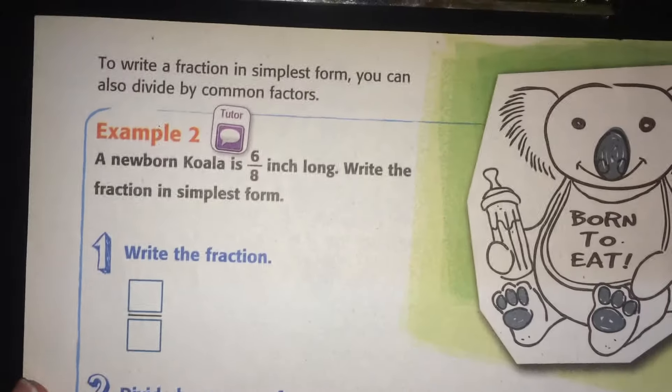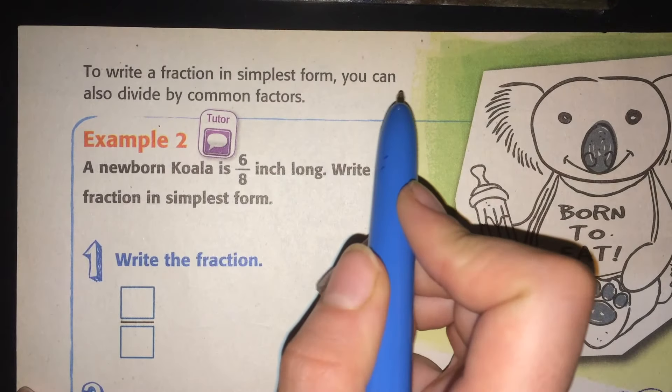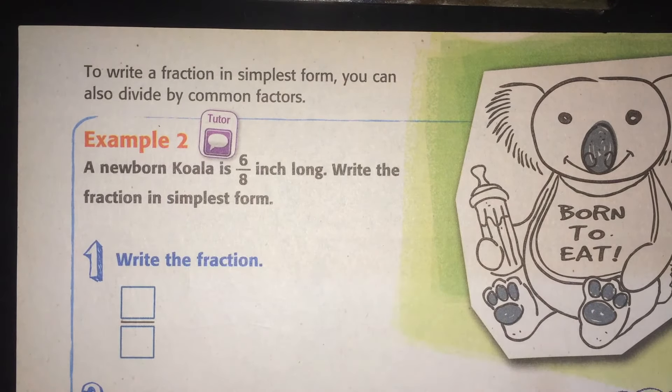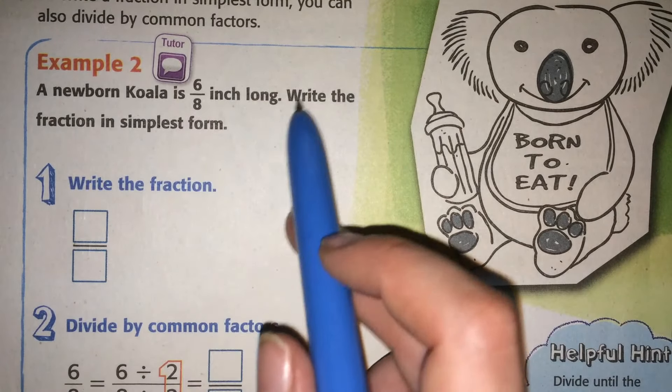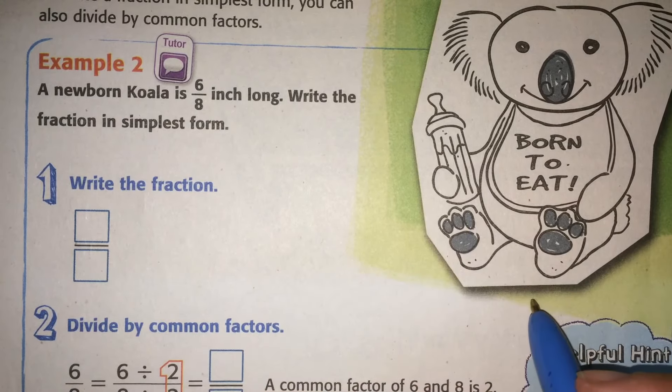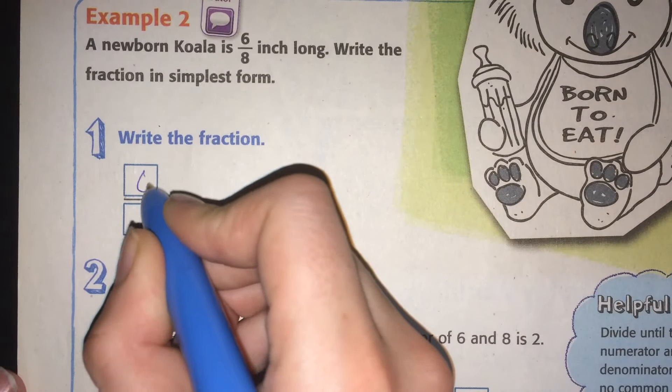Example number 2. To write a fraction in simplest form, you can also divide by common factors. A newborn koala is 6 eighths inches long. Write the fraction in simplest form. So the fraction is 6 eighths.